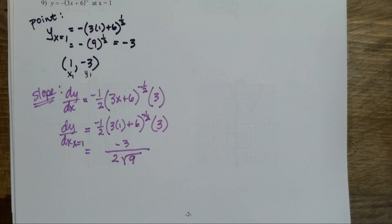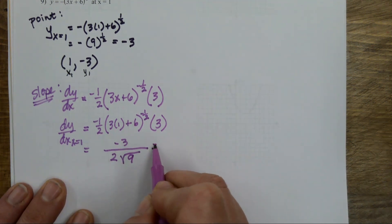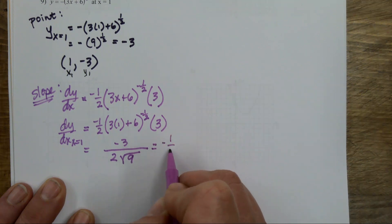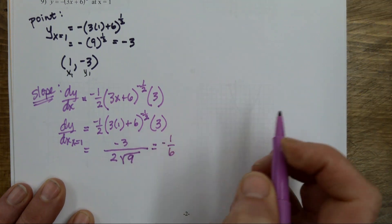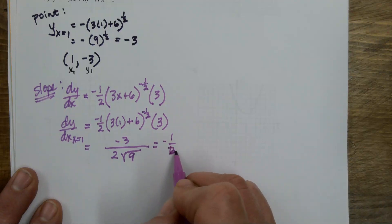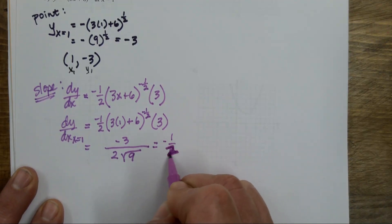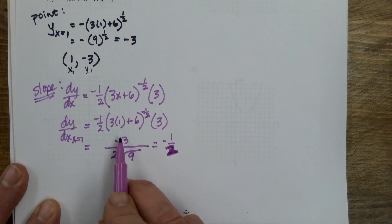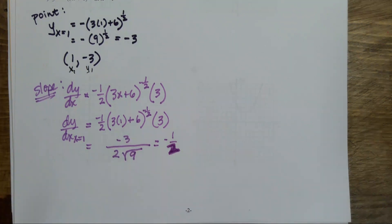I should have cleaned that up — I should have put that square root in the denominator. This is negative 3 over 2 times the square root of 9. The square root of 9 is 3, and the 3's cancel out, so I'm just left with negative one-half. Good — so negative one-half.